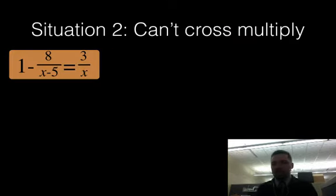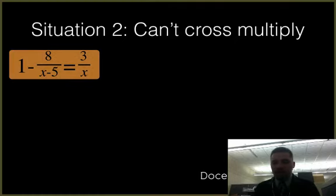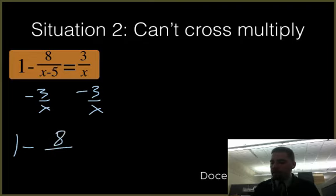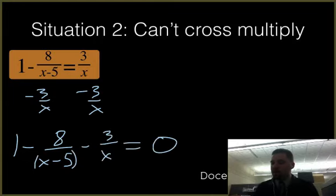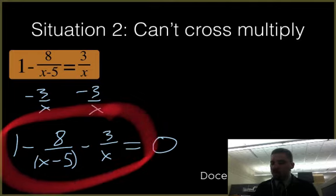So this one, same situation. It looks simpler, but I still have the same problem. I still can't cross multiply because of this 1. So what I'm going to do is subtract 3 over x from both sides. I'm not going to simplify or combine anything. I'm just going to leave it like this: 1 minus 8 over (x minus 5) minus 3 over x, all equal to 0. And put this entire thing in your graphing calculator on the left, and then see what happens.